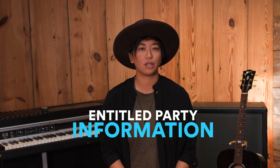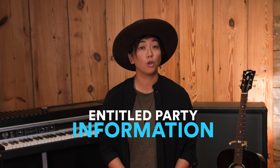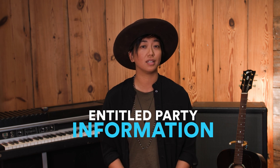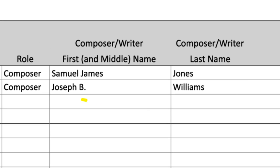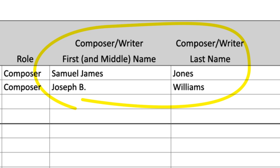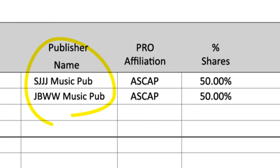A cue sheet also includes entitled party information — who should get paid — the names of the composers or songwriters, the names of the publishers, and each party's ownership shares.